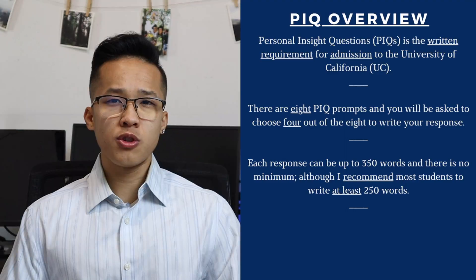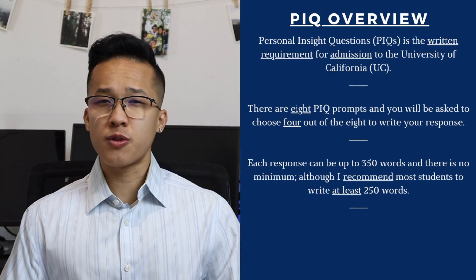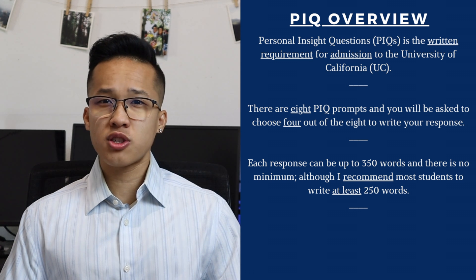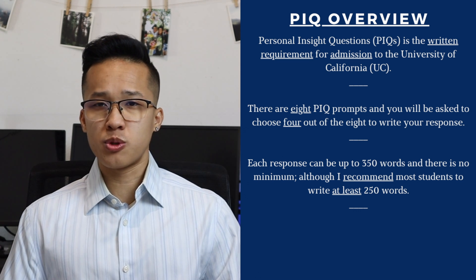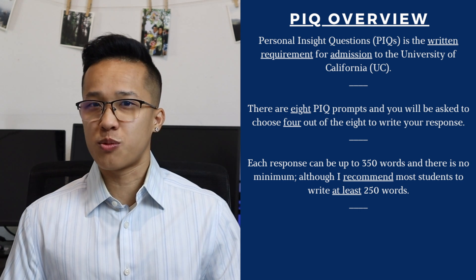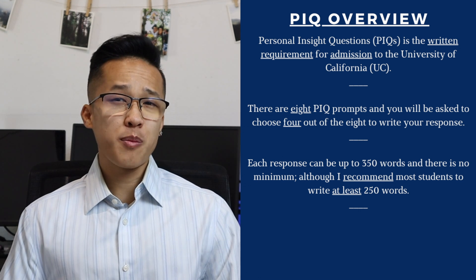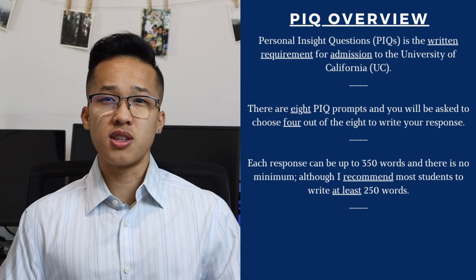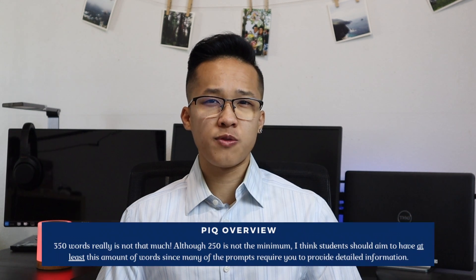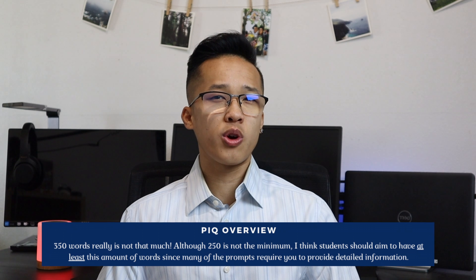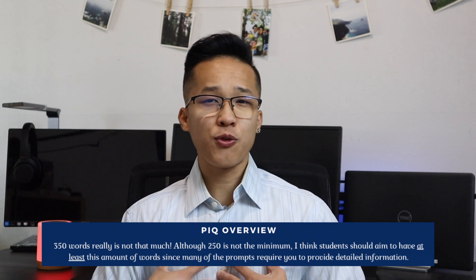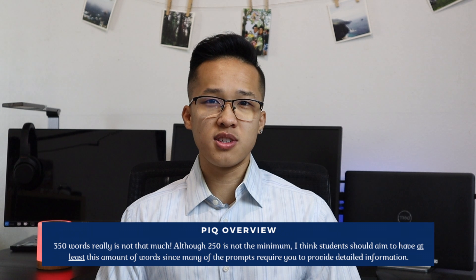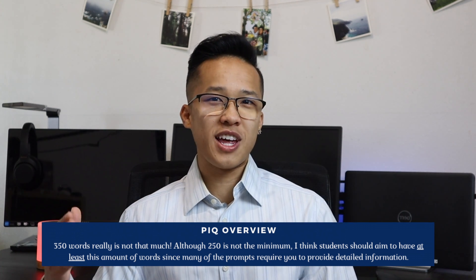For each individual PIQ, your essay response can be up to 350 words. The UCs don't actually have a minimum for each individual response, so it could really be as little as you want — even just 10 words if you really wanted. With that being said, I do really recommend students try to get to at least 250 words. The maximum is 350 and that's really not that much, so a lot of these questions will require you to provide a decent amount of information. I feel like 250 words is the minimum you need to really get a lot of your points across.